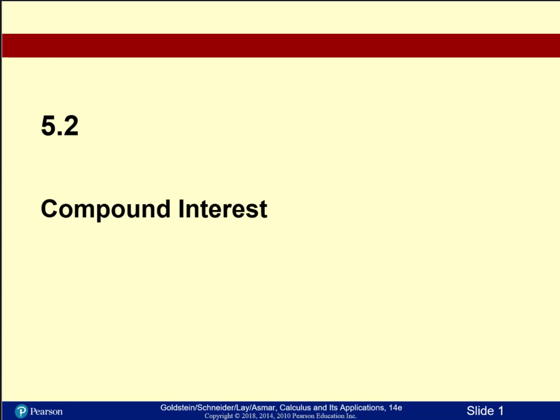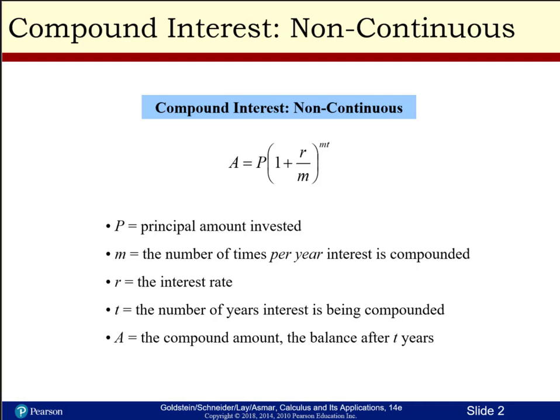Hi there and welcome, my name is Rebecca Weaver. We are going to be looking at compound interest today, out of section 5.2 in your textbook. Compound interest — first up, we're looking at non-continuous interest, which is given by the formula A equals P times the quantity 1 plus r divided by m, all raised to the m times t power.